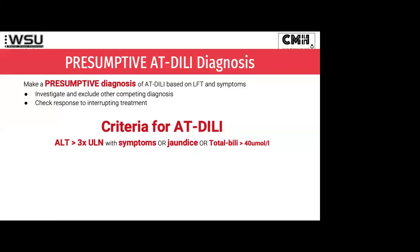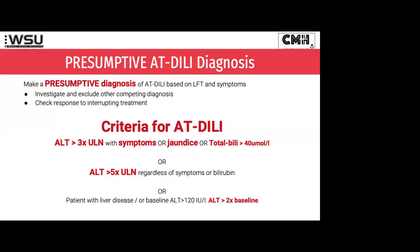In the old days, the bilirubin used to be a separate criteria, but it's now added into patients where the ALT is over three. Usually if your bilirubin is over 40, you'll be symptomatic — it's bilirubin that makes people so nauseous. If the ALT is over five times the upper limit of normal — that's 35 times five, around 175 — even if they're asymptomatic, we would call that a DILI. And then for patients who already had liver problems before starting TB treatment, with an ALT over 100 at baseline, you're going to use ALT more than twice the baseline as your reference point. Those are your main three criteria.